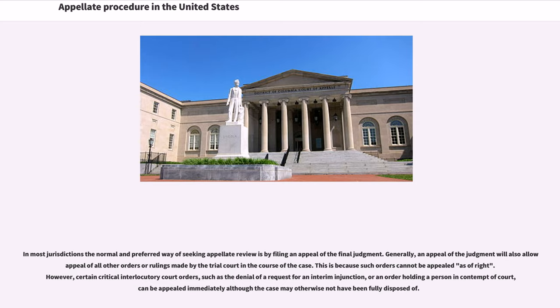However, certain critical interlocutory court orders, such as the denial of a request for an interim injunction, or an order holding a person in contempt of court, can be appealed immediately although the case may otherwise not have been fully disposed of.